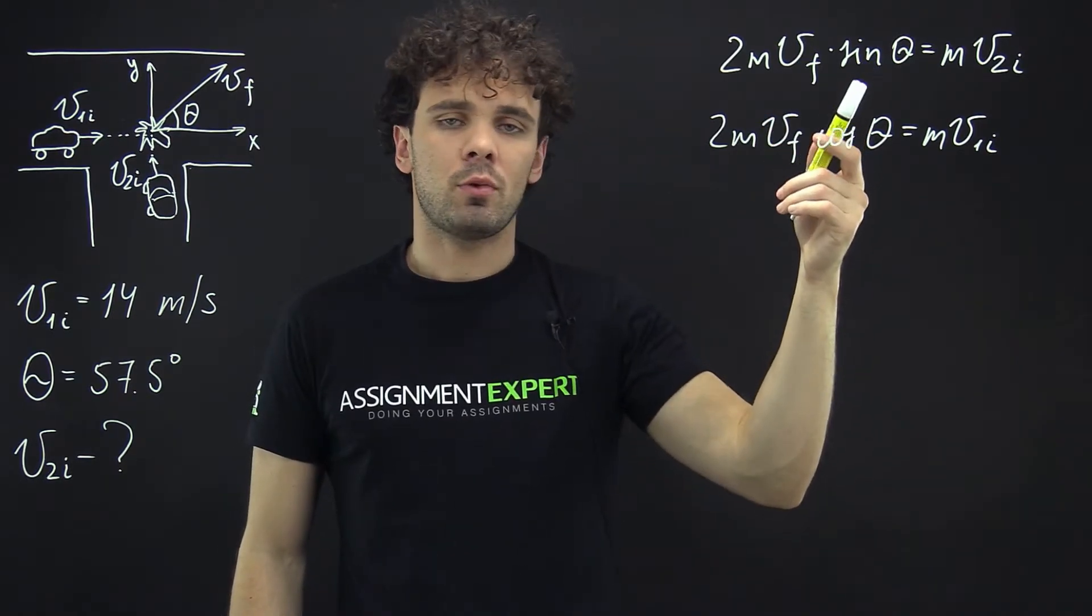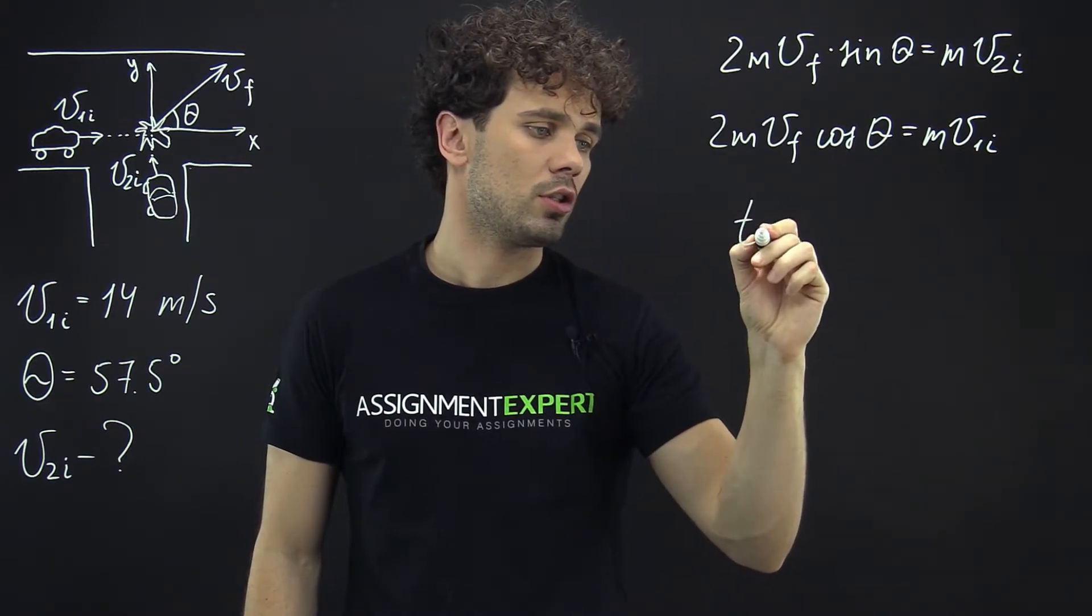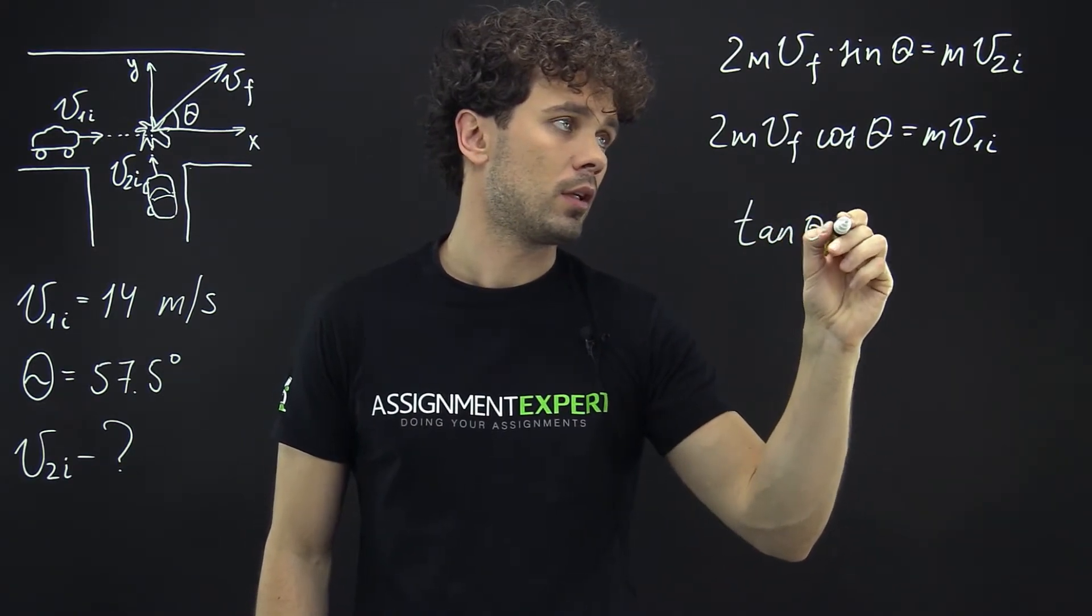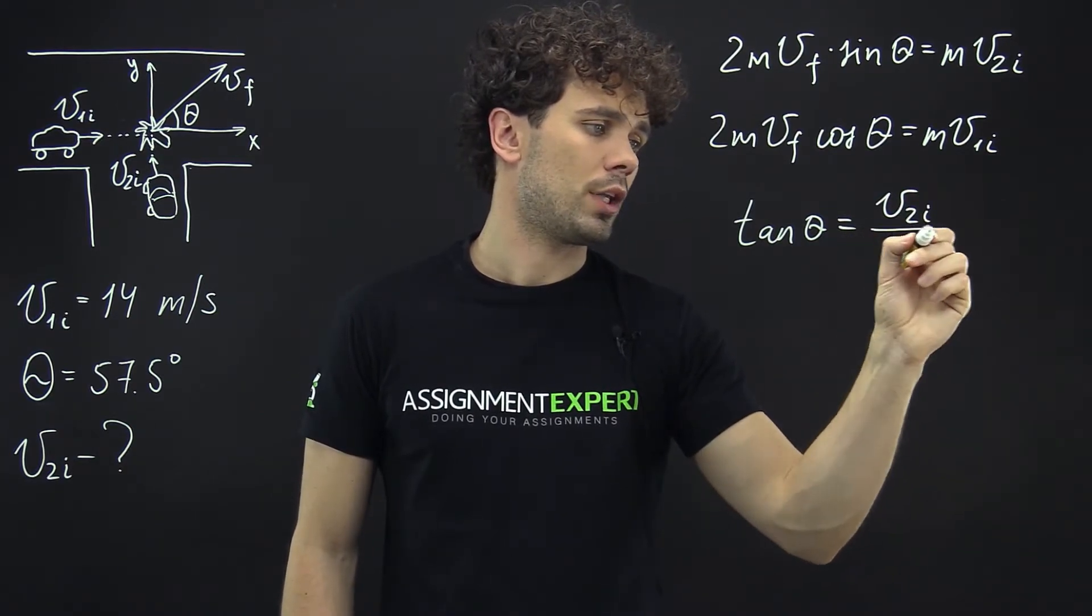Now we can divide the first equation by the second and we will get the following: tangent of the angle theta equals V2i over V1i.